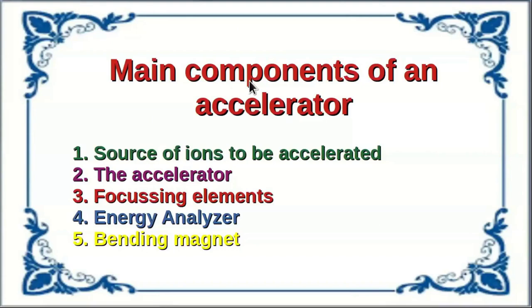The main components of an accelerator are: first, a source of ions to be accelerated; second, the basic accelerating portion itself; third, focusing elements; fourth, an energy analyzer which selects particles of a definite energy; and finally, a bending magnet whereby the direction of the accelerated beam is suitably changed so as to enter the required experimental arrangement.